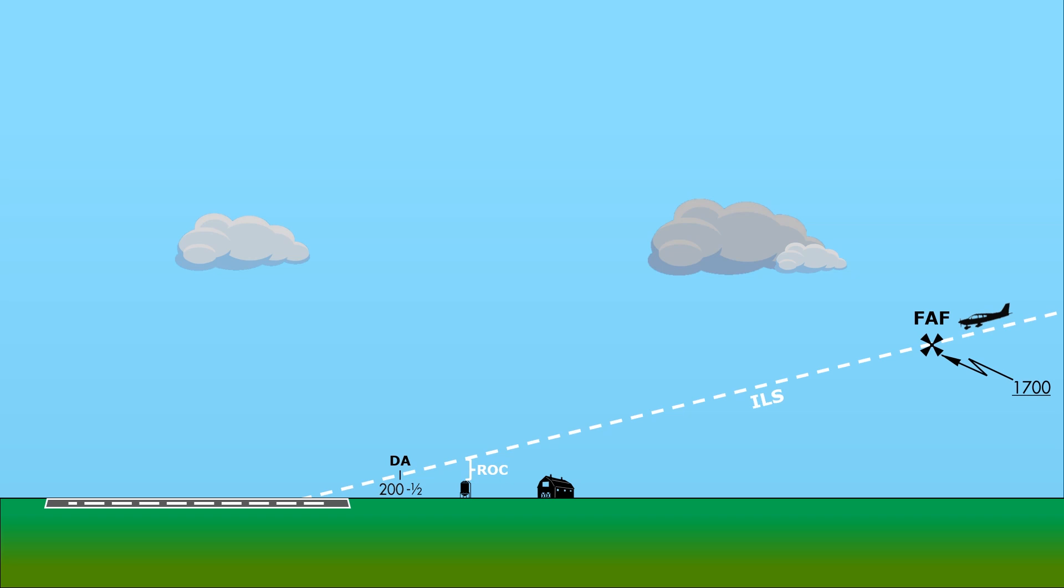The localizer-only approach is non-precision. The same ROC requirements don't apply. The approach designers look at obstacle clearance requirements on the intermediate segment of the approach, that's the segment before the final approach fix, and instead of a downslope, it's a level horizontal line, shown here in yellow.